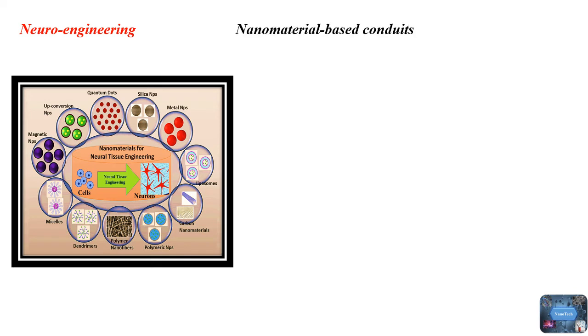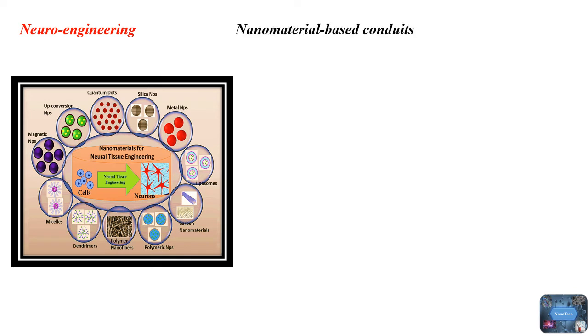Nanomaterial-based conduits could be a viable alternative for nerve healing. One of these conduits is made of chitosan, a polymer that is comparable to glycosaminoglycans in nature and makes the graft biodegradable. The inclusion of gold nanoparticles reinforces the chitosan's rather high mechanical strength.